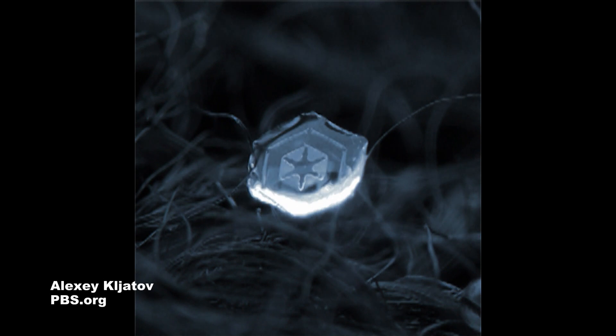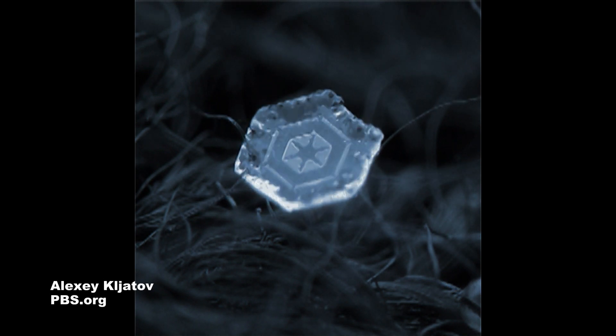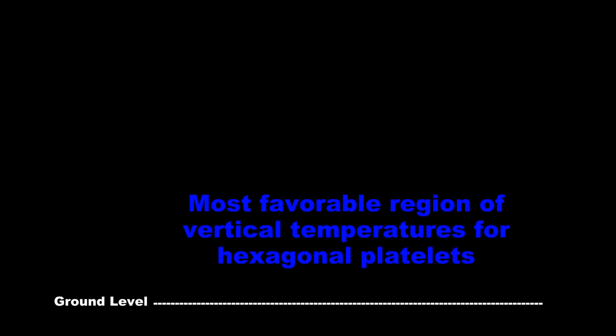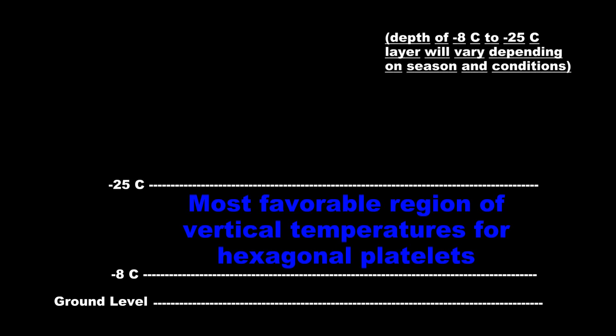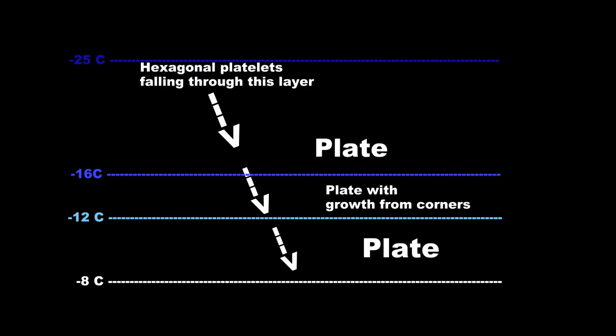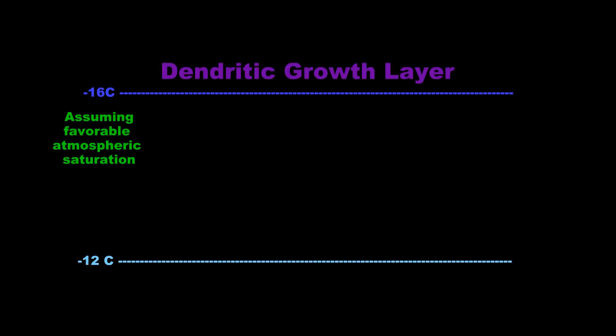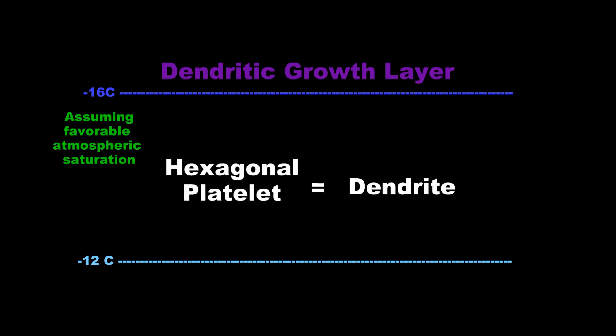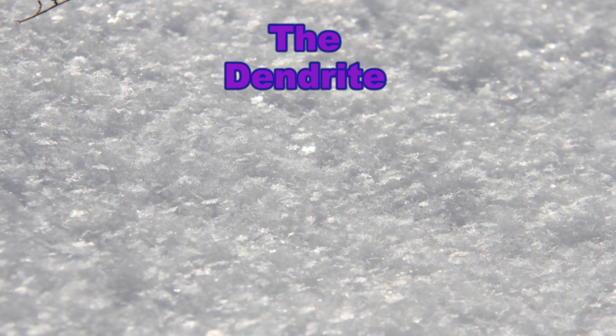It is called a hexagonal platelet because it is a plate with hexagonal symmetry. This crystal form usually grows by vapor deposition at temperatures between negative 8 and negative 25 degrees Celsius. In a special range between negative 12 and negative 16 degrees Celsius, as the ice crystals grow and attain a higher fall velocity, if the atmospheric saturation is right, we can see these hexagonal platelets grow arms out from the sides, which become what we most commonly associate with snowflakes — the dendrite.